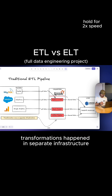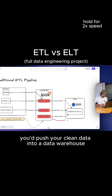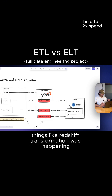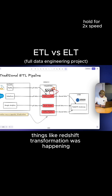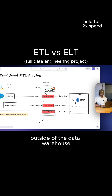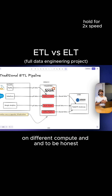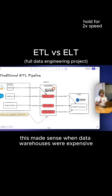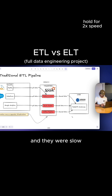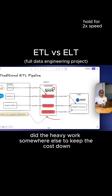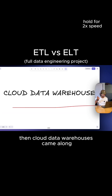Transformations happened in separate infrastructure, and from there you push your clean data into a data warehouse like Redshift. Transformation was happening outside of the data warehouse on different compute, and to be honest this made sense when data warehouses were expensive and slow — you did the heavy work somewhere else to keep the cost down.